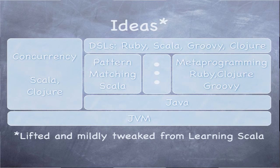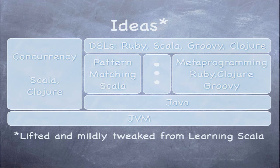You can look at the domains within your application and figure out the best language for each piece. For example, you can use Scala or Clojure for concurrency — there are functional programming languages well-suited for that.